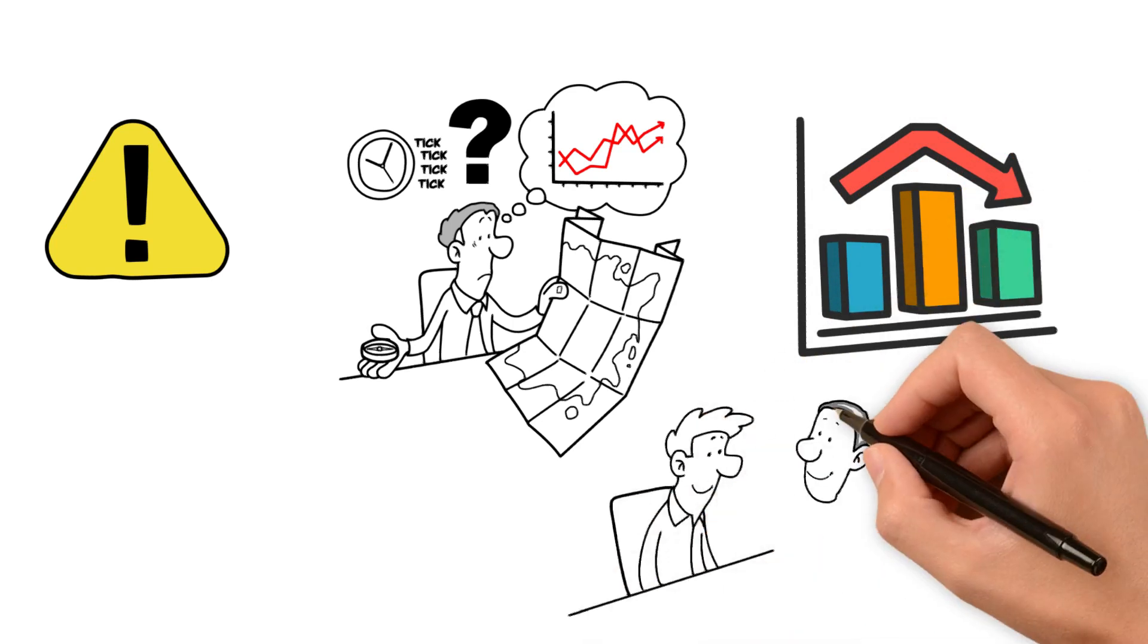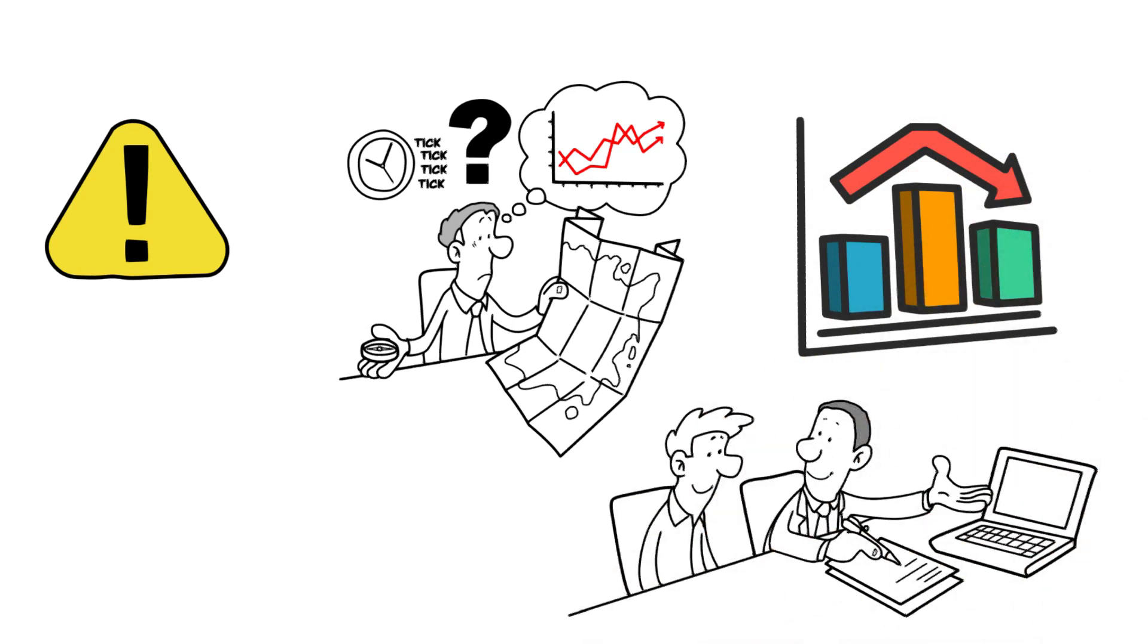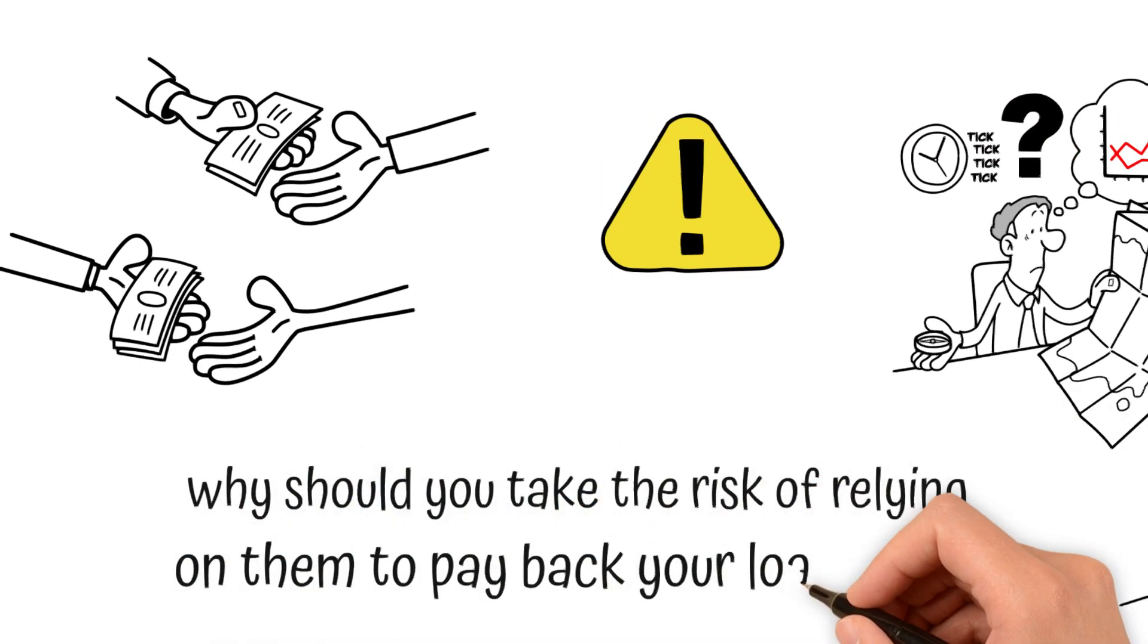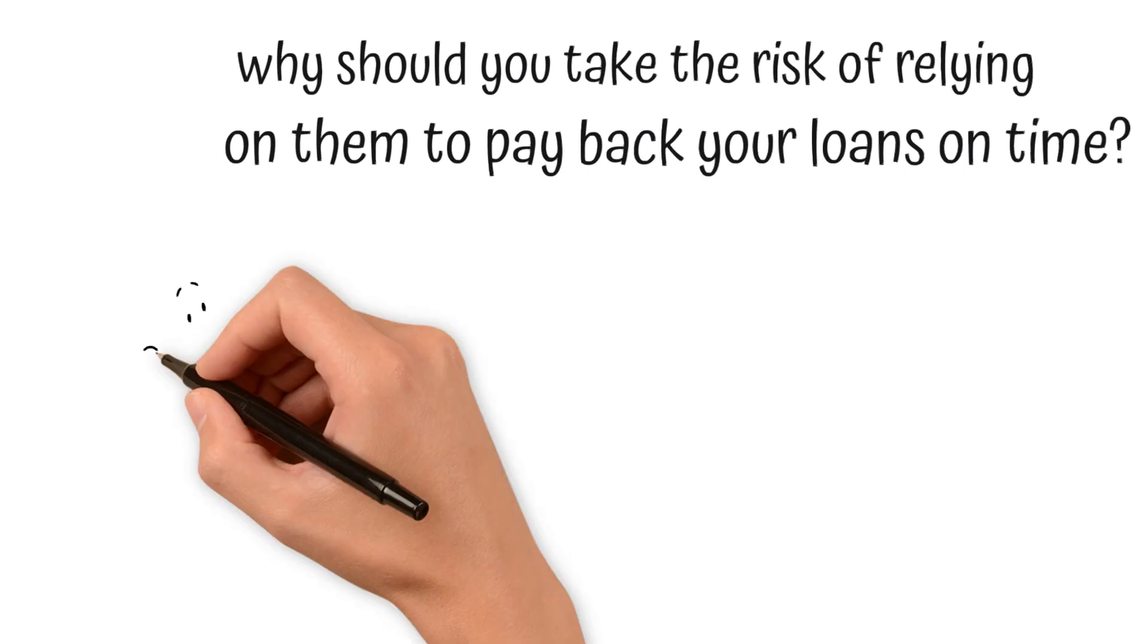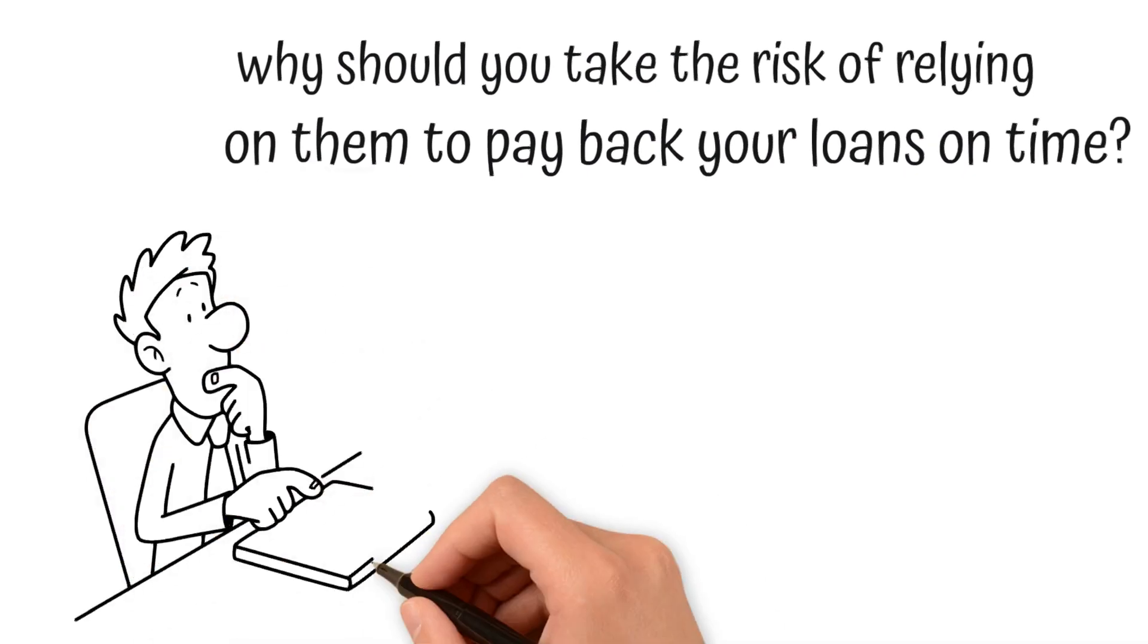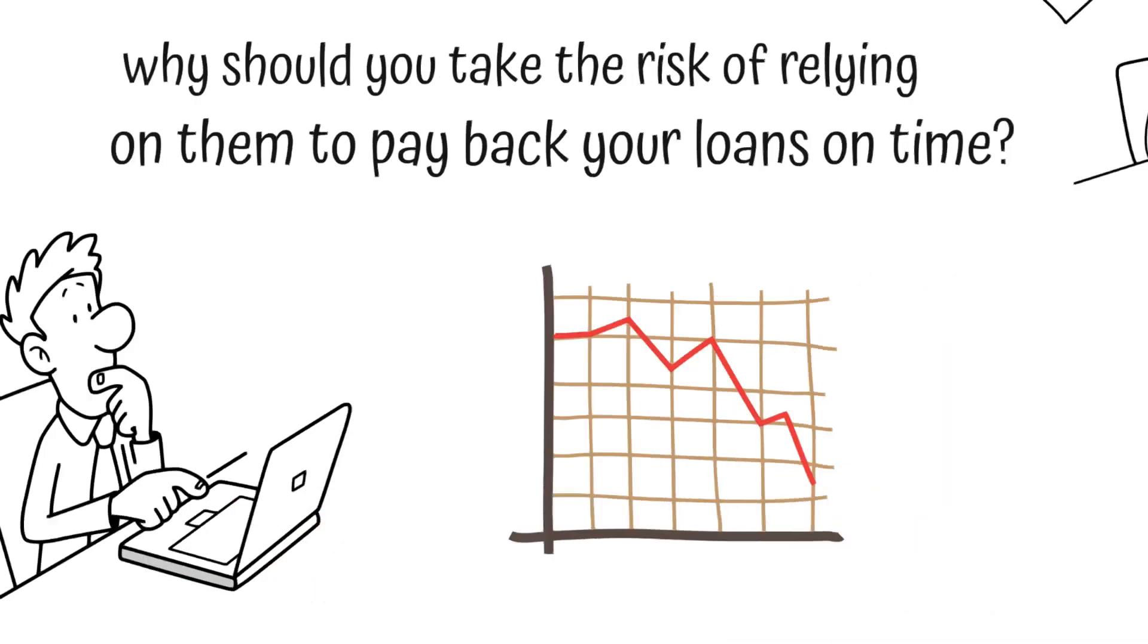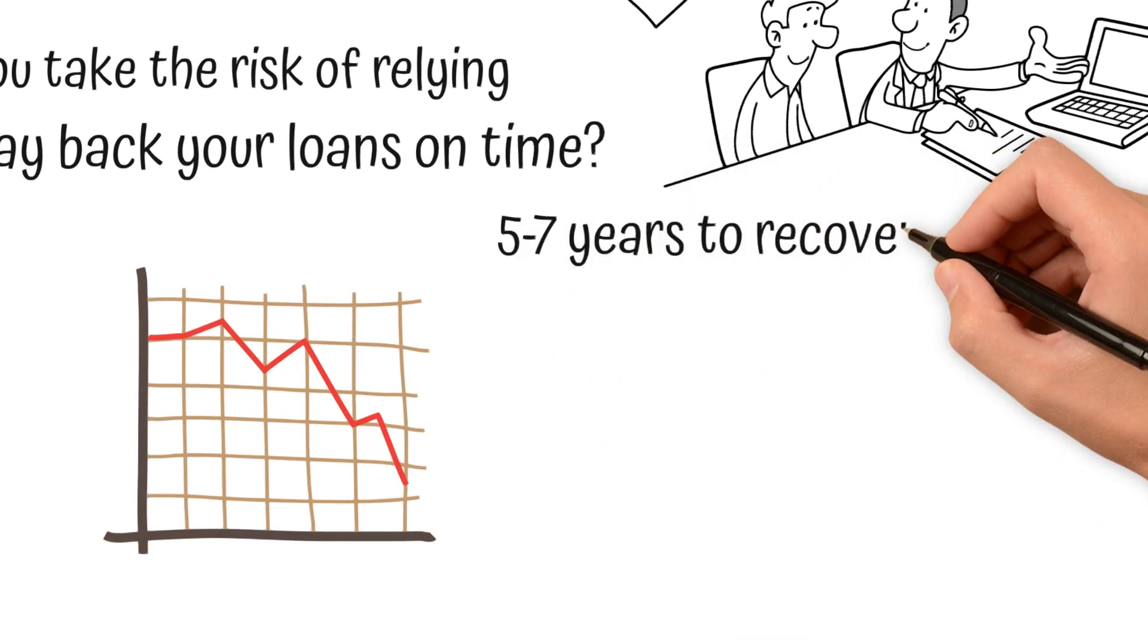So, if a company's stock prices aren't in their control in the short term, why should you take the risk of relying on them to pay back your loans on time? In addition, nobody can predict how far stocks can fall in a short period. Following a plunge, the stock market may take five to seven years to recover its losses.